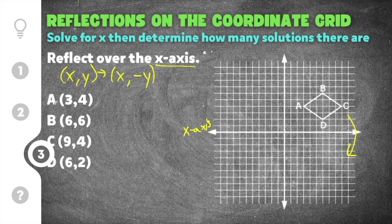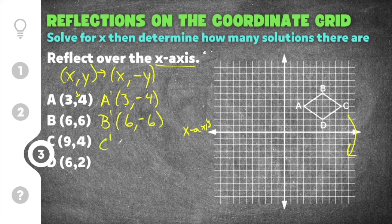We have coordinates A, B, C, and D, and we're going to find A prime, B prime, C prime, and D prime. For A prime, keep the x the same and the y is positive so it becomes negative — negative 4. For B prime, keep the x the same and change y from positive 6 to negative 6. For C prime, keep the x the same and change y from positive 4 to negative 4. For D prime, it's going to be (6, negative 2).